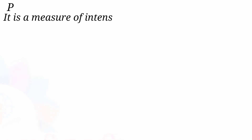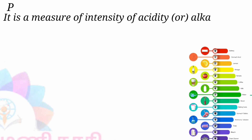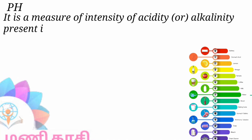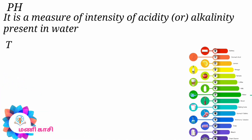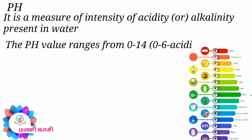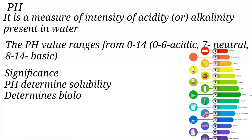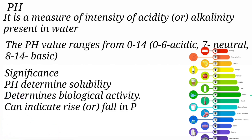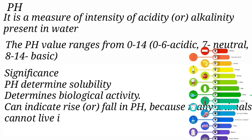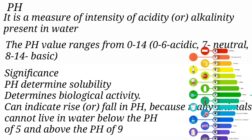pH factor is a measure of the intensity of acidity or alkalinity present in water. The pH value ranges from 0 to 14: 0 to 6 is acidic, 7 is neutral, and 8 to 14 is basic. Significance: pH determines solubility and biological activity. It can indicate a rise or fall in pH because many animals cannot live in water below a pH of 5 or above a pH of 9.